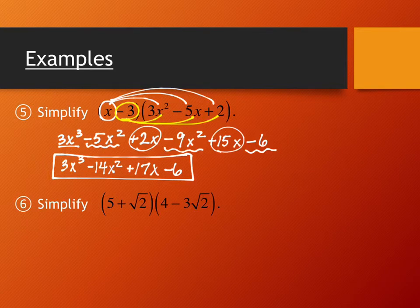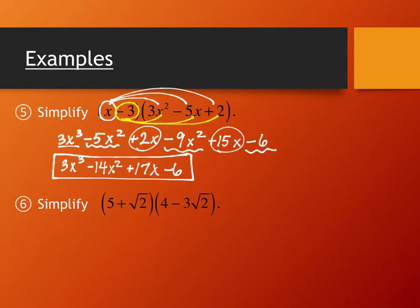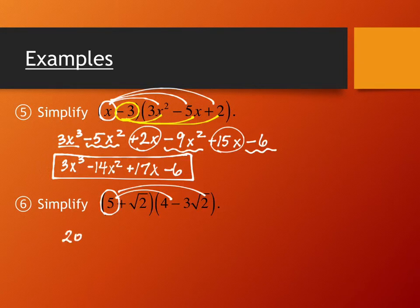Number 6 isn't really a polynomial in the traditional sense — there are no x-to-powers terms — but the book includes it because the multiplication process is the same. We'll do the same distribution as with two terms times two terms, except with radicals instead of variables. Distributing 5: 5 times 4 is 20, and 5 times negative 3 square root of 2 is negative 15 square root of 2 — the 5 multiplies the 3, and the square root of 2 stays.